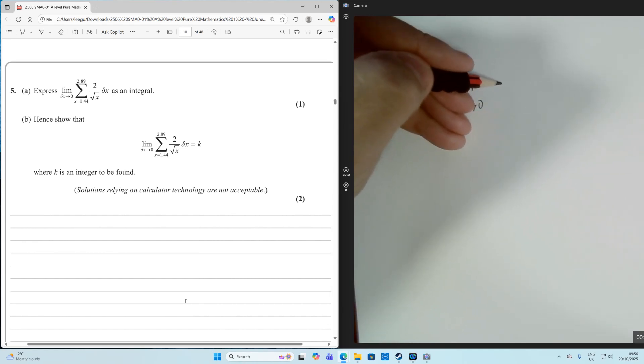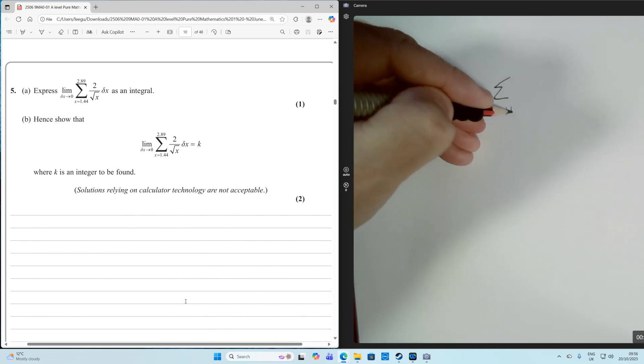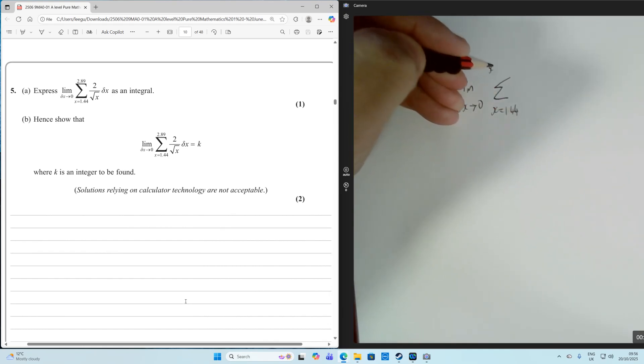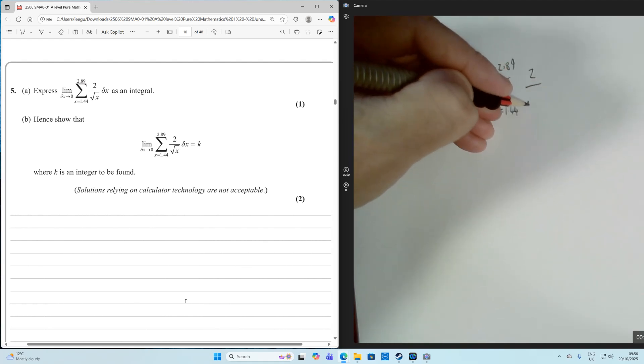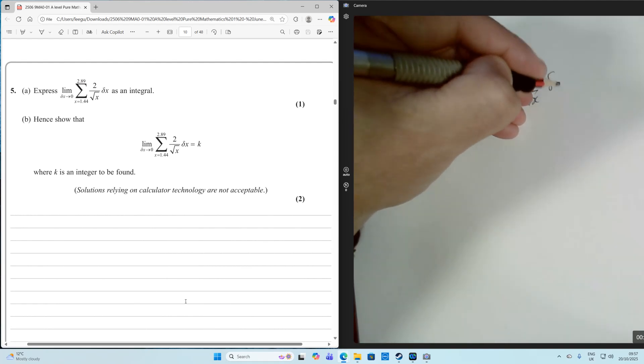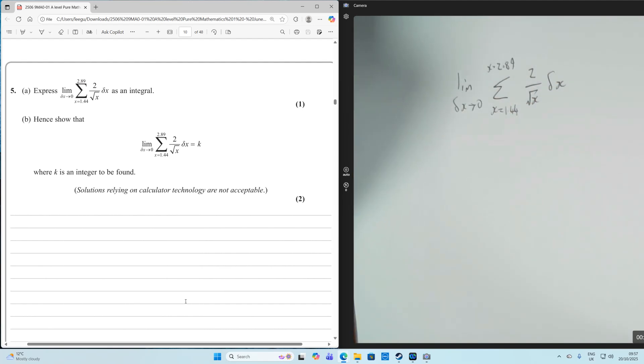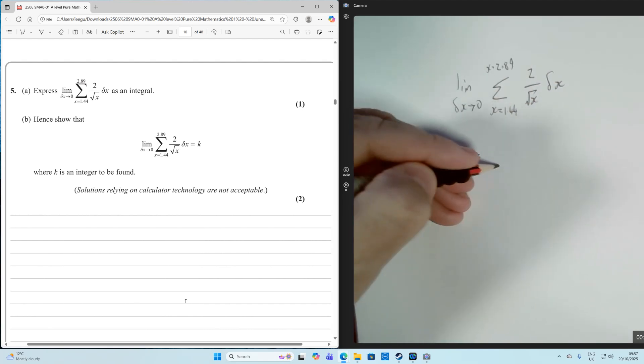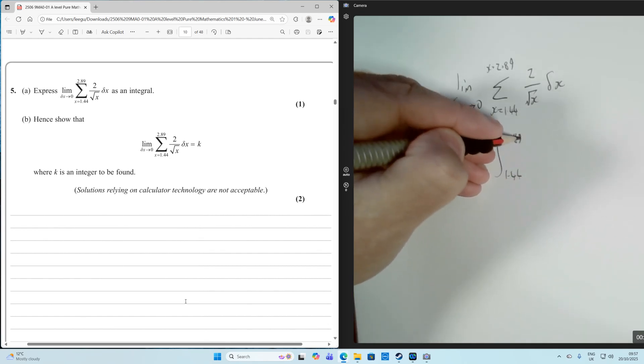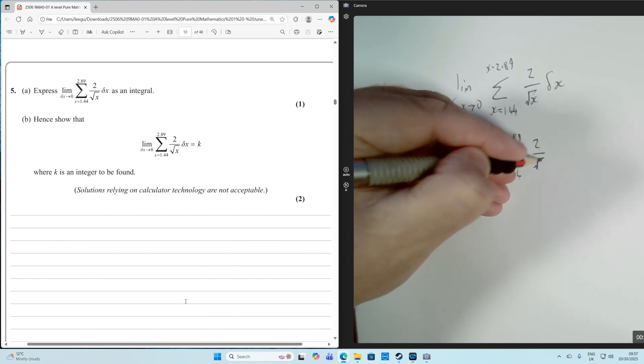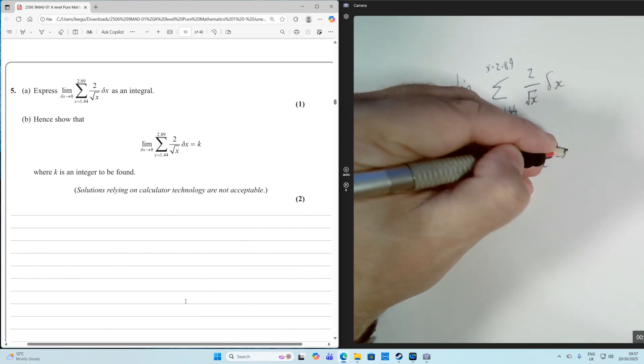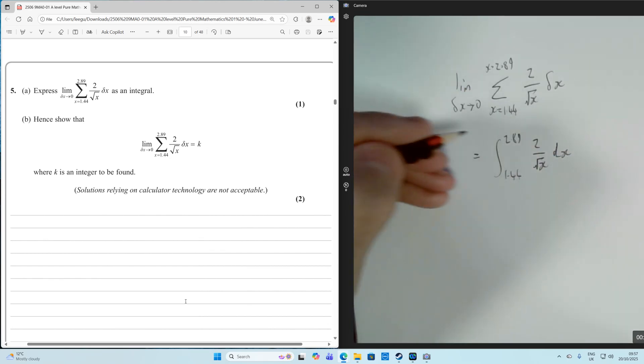then what that means is it's the same as integration. So the limit as this summation between x equals 1.44 and x equals 2.89 of 2 over root x delta x looks really confusing, but all it means is it's just the integral between 1.44 and 2.89 of 2 over root x delta x. So that's all it means.